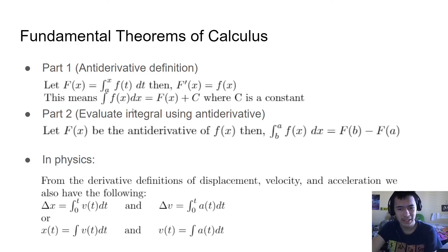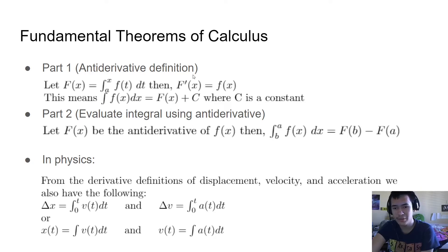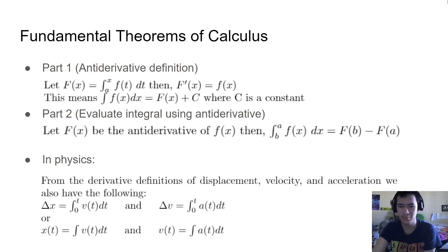This means that the indefinite integral of f(x) with respect to dx is just equal to capital F(x) plus C, where C is a constant. Because when you take the derivative of this, you want to end up with just f(x). In order to do that, you add a constant, because when you take the derivative, the constant is going to go away. You don't know that it's just going to be zero — it could be any number.